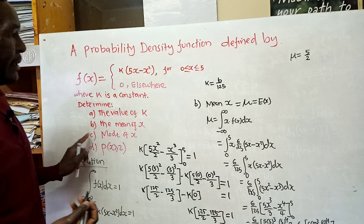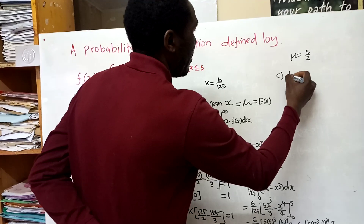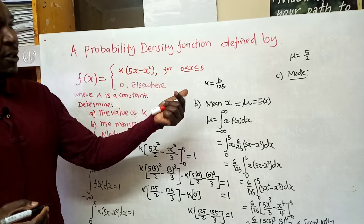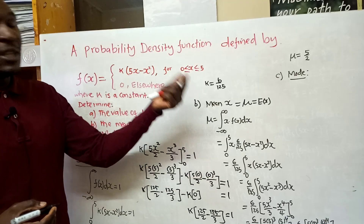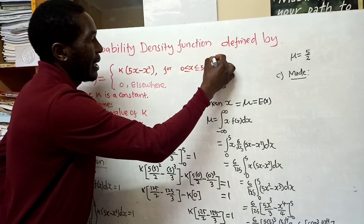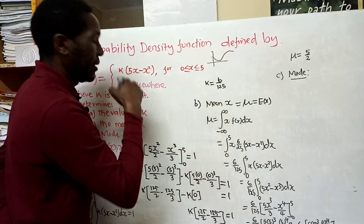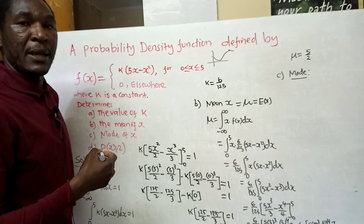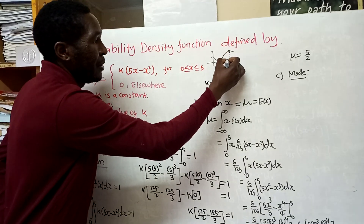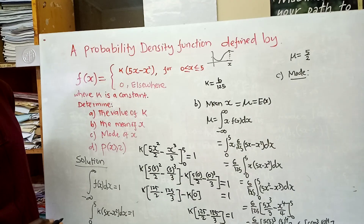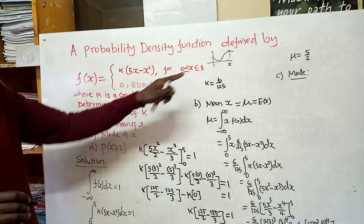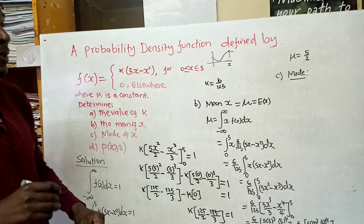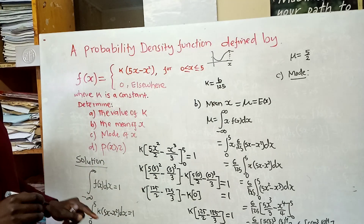For part c, we find the mode. The mode is the x value of the function when the function has reached a maximum. If you have a curve, at the point where it reaches a maximum, the x value exactly below that maximum point is the mode. At a maximum point, the gradient function is equal to 0.